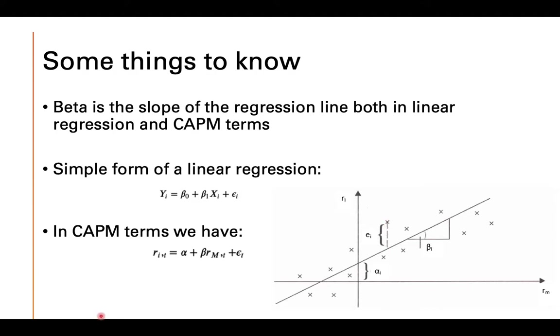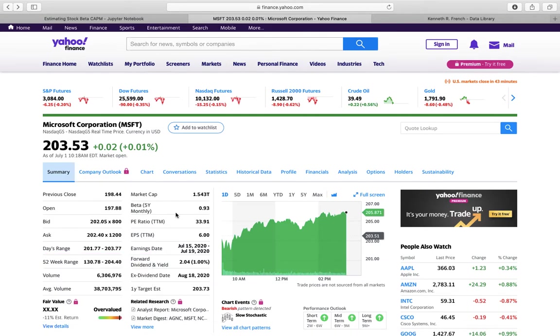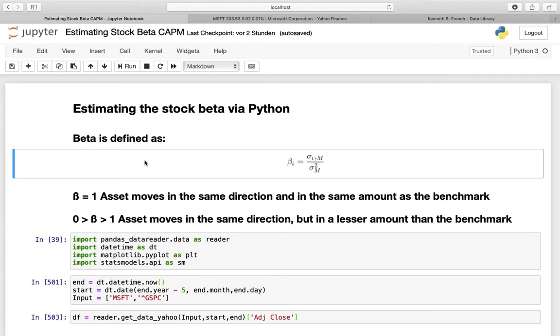Now let's move to real stock data and take a look at Microsoft. Microsoft has beta of 0.93. And this beta is calculated over five years on a monthly base, and we are going to exactly replicate that. Let's get started by actually understanding this beta. So beta is defined as the covariance between the asset's return, so for example Microsoft, and the market return, so for example the S&P 500, divided by the market variance of the S&P 500.